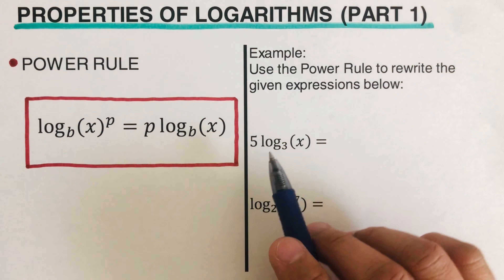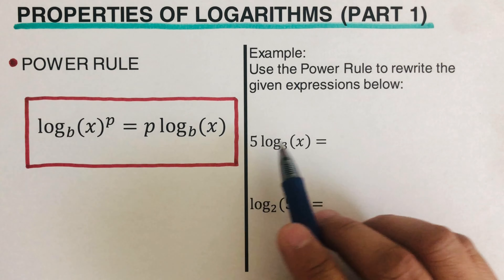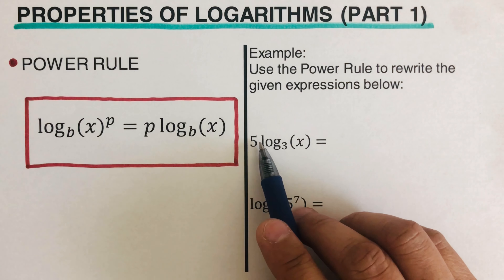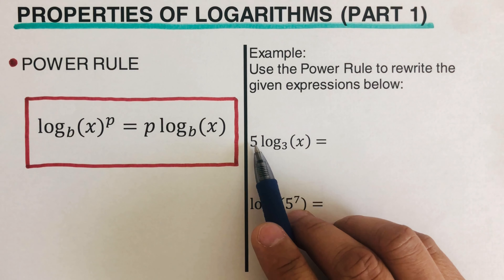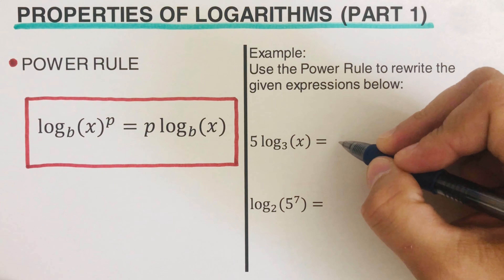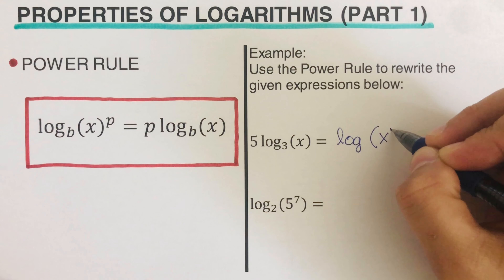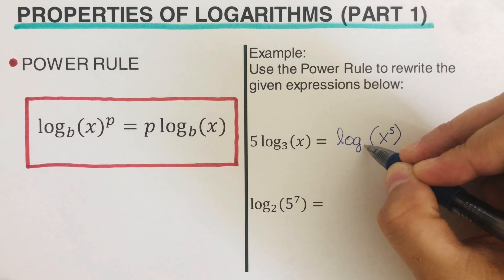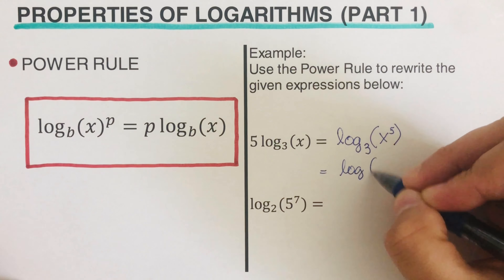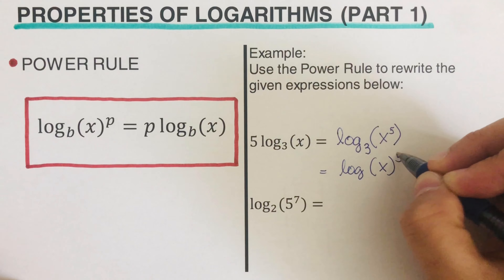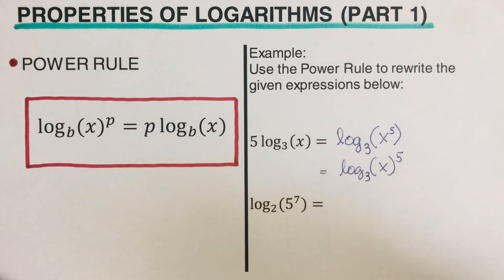Let's take this first example: five log of x to the base three. We do it backwards — this five is a coefficient of the whole log expression, so it's actually an exponent of x. We can rewrite this as log of x to the fifth power, to the base three. These two forms are just equivalent equations.